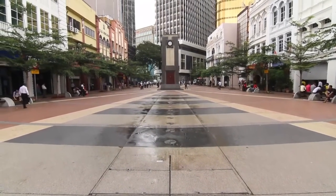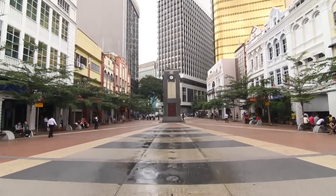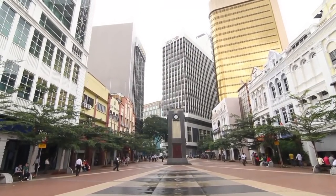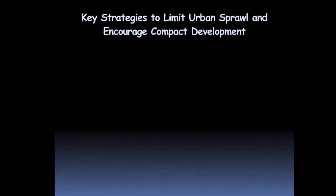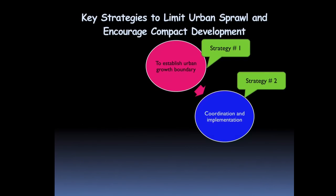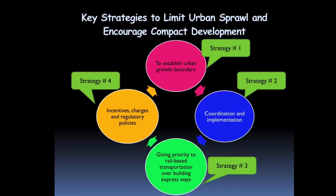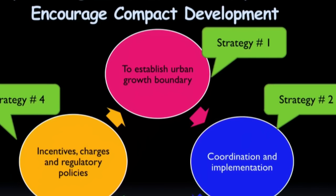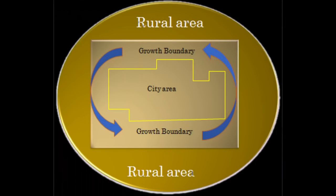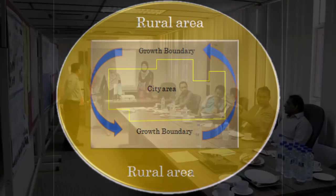So how can city governments in developing countries such as Malaysia encourage compact development and tackle the issue of urban sprawl? Here are some of the key strategies to be adopted. Strategy number one: urban planning authorities in the metropolitan region should establish growth boundaries for their cities, and development should be allowed only within the city boundary to intensify development and use land more efficiently.